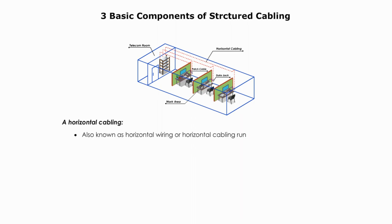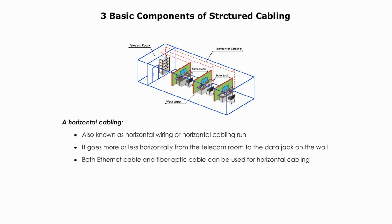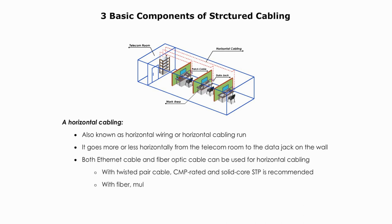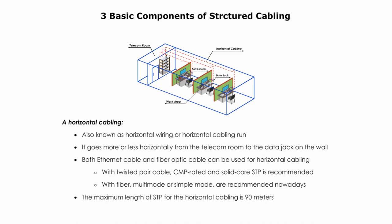Horizontal cabling is also known as horizontal wiring or horizontal cabling run. It goes more or less horizontally from the telecom room to the data jack on the wall. Both Ethernet cable and fiber optic cable can be used for horizontal cabling. With twisted pair cable, CMP rated and solid core STP is recommended. With fiber cable, multi-mode or single-mode are recommended nowadays. The maximum length of STP for the horizontal cabling is 90 meters.